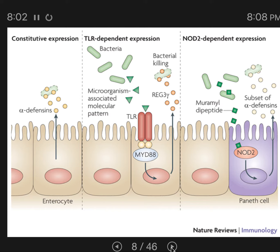The microbial community in our intestines interacts with our immune system in complex ways. They trigger immune responses and also train the immune system to tolerate certain types of microbes. The mechanisms by which this works have not been fully explained, but we are rapidly filling in the gaps in our understanding.